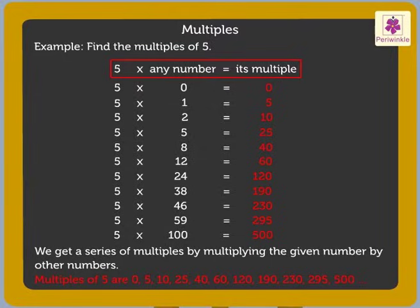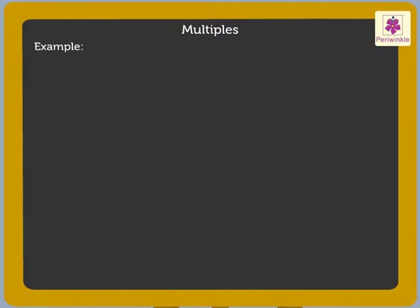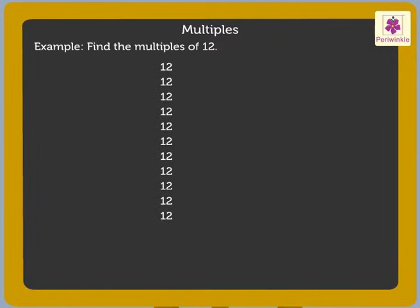Let us look at one more example. It is easy when we multiply 12 by 0, 1, 2, 3, 4, 5, 6, 7, 8, 9, 10, and so on.